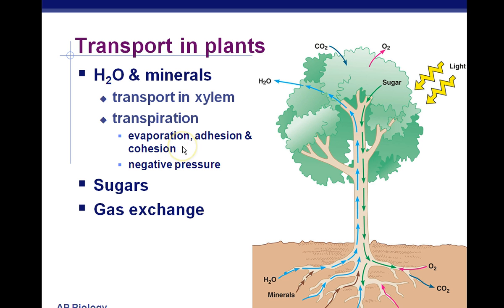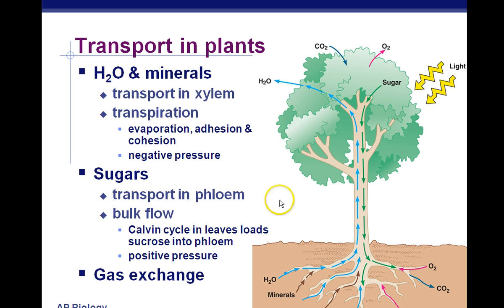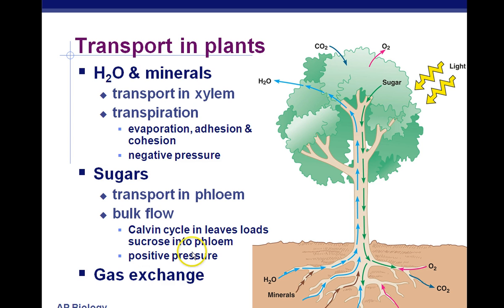We're going to go into more detail on this. Negative pressure means there's a pull. In order to pull up water, we're going to have a constant evaporation of water from the leaves, and that's going to create negative pressure. Sugars are transported in the phloem — think 'phloem food.' Plant food is sugars, and this is going to be a lot of sugars being moved, called bulk flow. The Calvin cycle, which produces the sugars in the leaves, loads sucrose into the phloem. Sucrose is a combination of fructose and glucose, and fructose is just a modified glucose. This is going to be a push into the phloem, and that's called positive pressure. For transpiration, we have negative pressure — make sure you write that down.